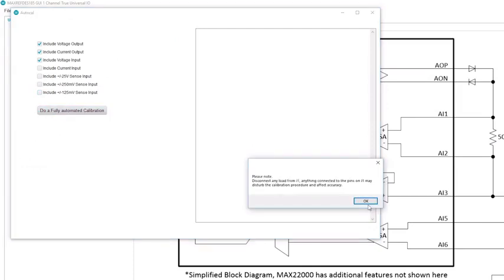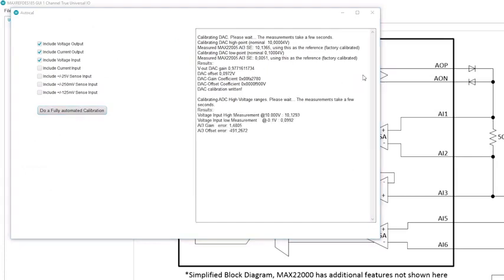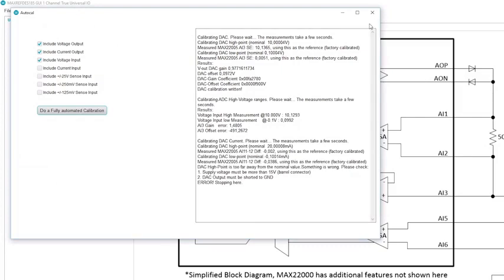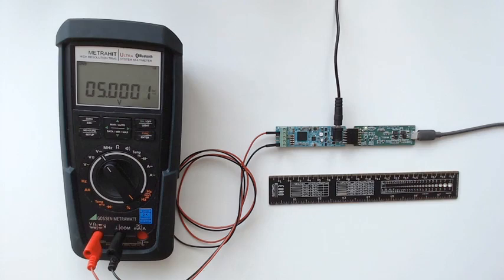Click on that. It runs through a full calibration. And now let's type in 5 volts again. And it should be fully calibrated now.